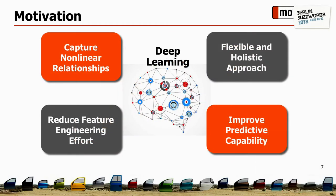We tried different approaches, and one was deep learning. Deep learning can capture nonlinear relationships, which is really important because most recommendation algorithms — whether matrix factorization or other types — usually have limits around linear relationships. It also reduces feature engineering effort to some degree because deep learning can take and combine different features together. The downside is it's hard to understand exactly why you're getting specific results, but in general it improves predictive capability. That was our motivation to try the deep learning approach.